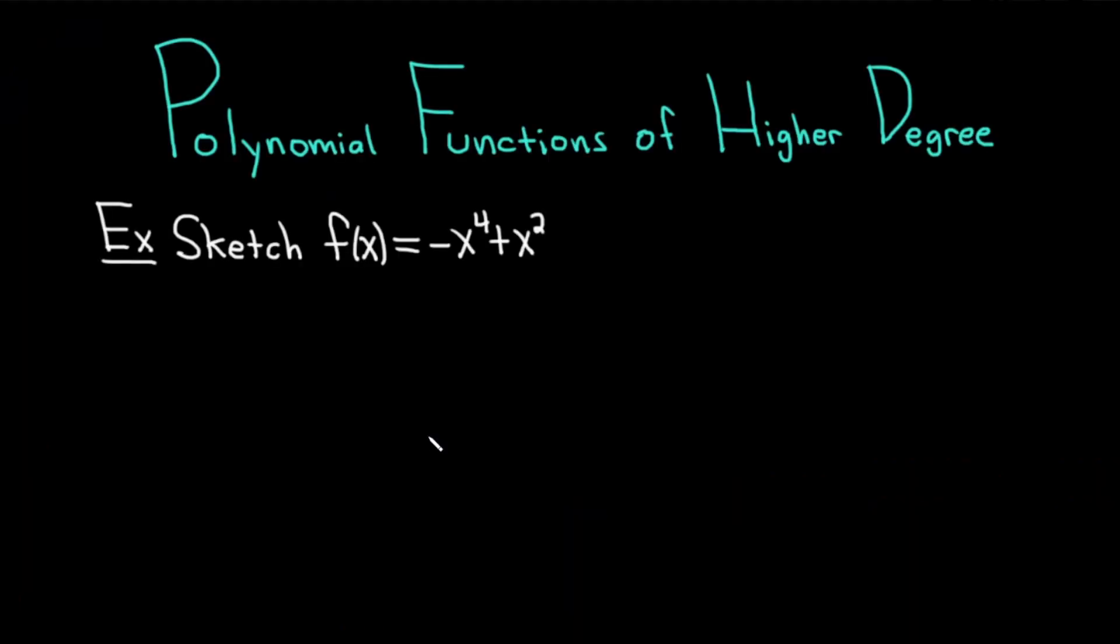Hi, everyone. It's the Mathsorcer here with Chegg. In this video, we're going to discuss polynomial functions of higher degree. We're going to sketch the graph of f of x equals negative x to the fourth plus x squared. Let's carefully work through this example solution.